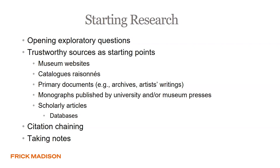Citation chaining is a term to describe finding a relevant resource and looking at its references to see what other relevant resources you might find, and doing the same to eventually narrow down your topic of interest. Proper note-taking methods include taking notes with full citations. In art history, the Modern Language Association or the Chicago Manual Style are typically used, and you can use citation software such as Zotero to help you construct and keep track of citations. You would also want to correctly distinguish quotes in your notes to avoid accidental plagiarism.